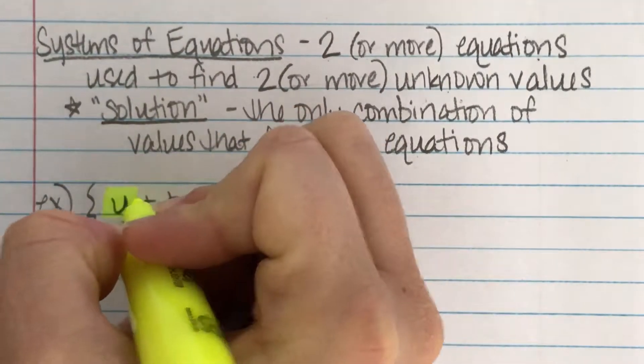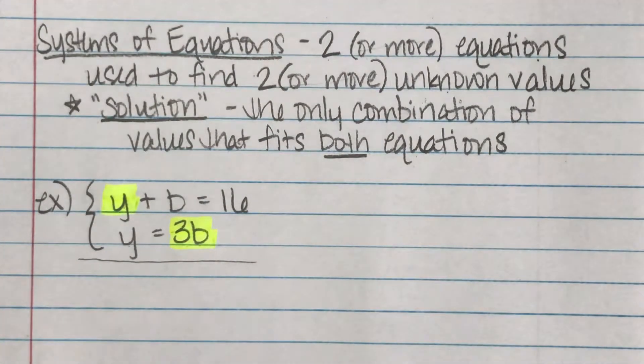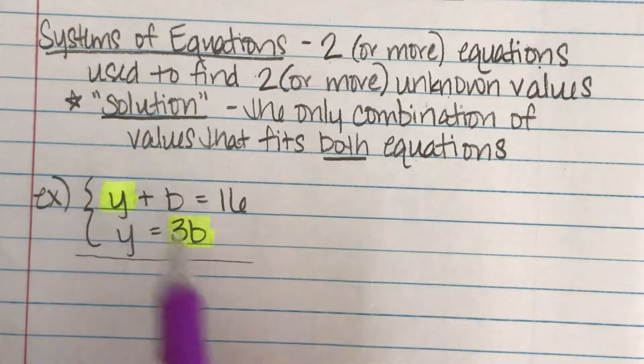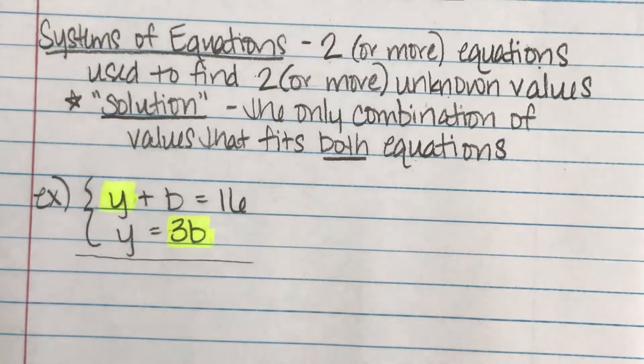Yellow also is the same as having three times the number of blue. It's like a translation or like a code word for it. That means in this other equation, instead of talking about yellow candies, I can go ahead and say three times the blue candies instead.